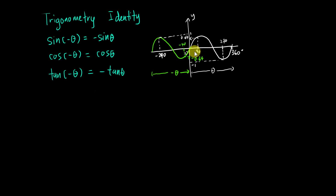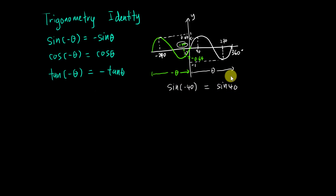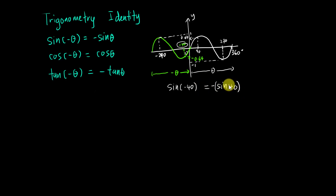So if I try to compute sine negative 40, I cannot say it equals sine 40, because sine 40 gives a positive value. In order to make both sides equal, I add a negative sign, so negative sine 40 will be equal to sine negative 40.